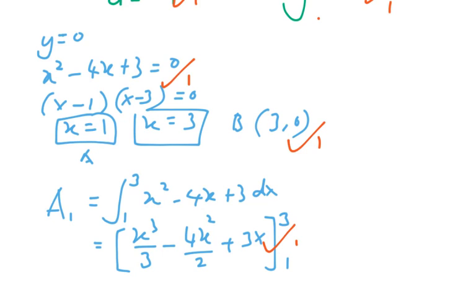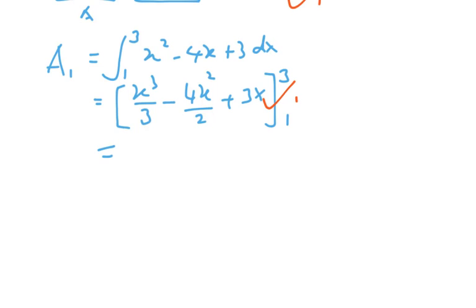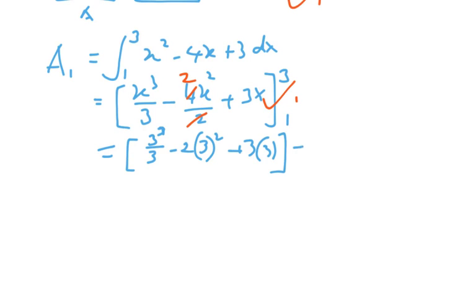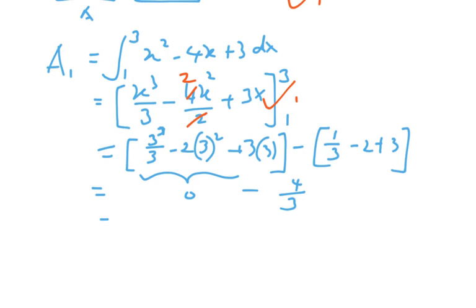Continuing with substitution of the limits: substituting x equals 3 gives 27 over 3 minus 2 times 9 plus 9, and substituting x equals 1 gives 1 over 3 minus 2 plus 3. Putting the values in the calculator, this part simplifies to 0, and the lower limit gives 4 over 3, so the result is negative 4 over 3. Since area must be positive, we take the modulus and get Area 1 equals 4 over 3.